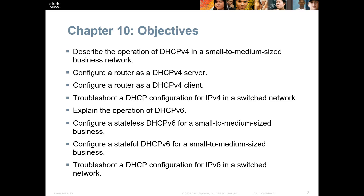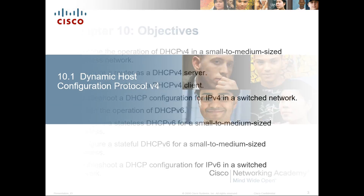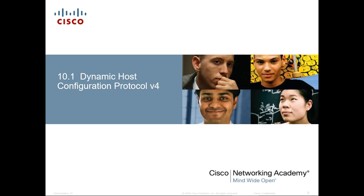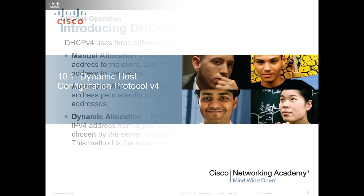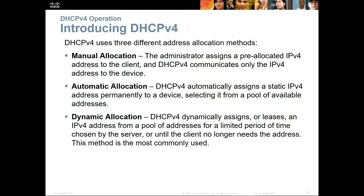We'll also talk about SLAAC, a version 6 type protocol. DHCP uses three different types of address allocation methods: manual allocation, automatic allocation, or dynamic allocation. With manual allocation, the administrator assigns all pre-allocated IPv4 addresses to clients, and DHCP communicates only those addresses to the devices — think of it as a reservation.